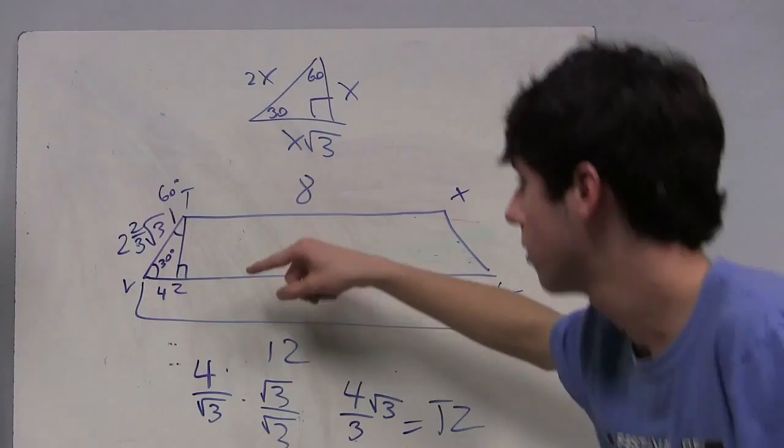Now, the hypotenuse of this triangle is double TZ, so TV is 8 root 3 over 3. And that is the end.